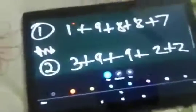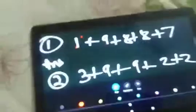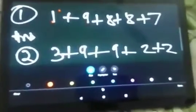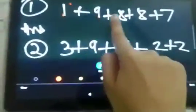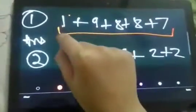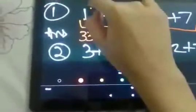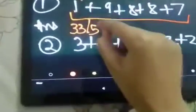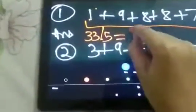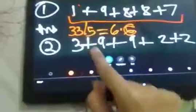So the first question is the average of 1 plus 9 plus 8 plus 8 plus 7. So if we find the average of these, we will get the sum as 33. And if we divide it by 5, the total numbers are 5, so I am going to divide it by 5. So I will get 6.6, as 6.6 into 5 is 33. So the answer would be 6.6.